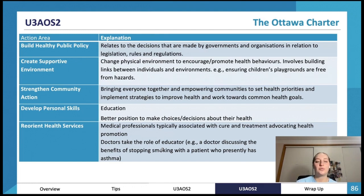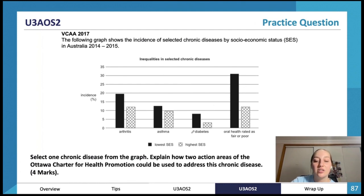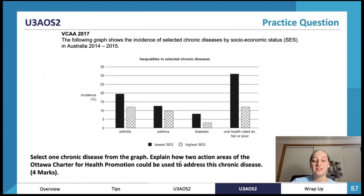Reorient health services is basically moving from the biomedical model to the social model of health to help prevent conditions before they occur. There's a graph here — we want to explain two action areas that could be used to address chronic diseases including arthritis, asthma, diabetes, and oral health, referring to action areas and how health promotion could improve health for these conditions.